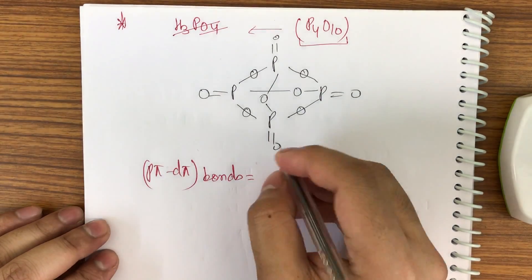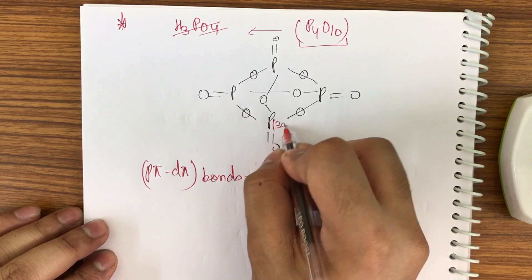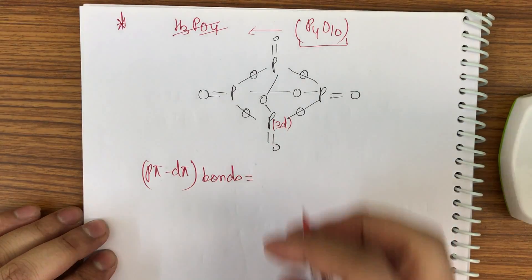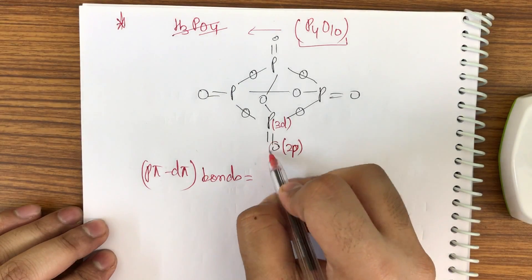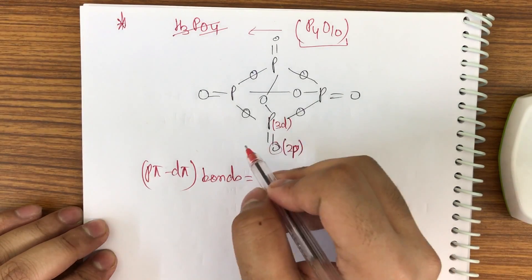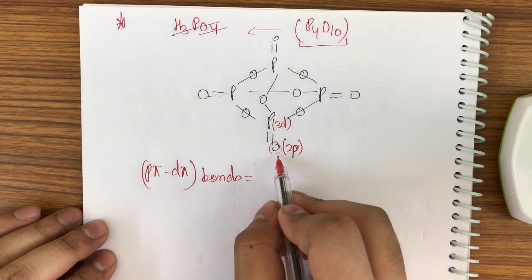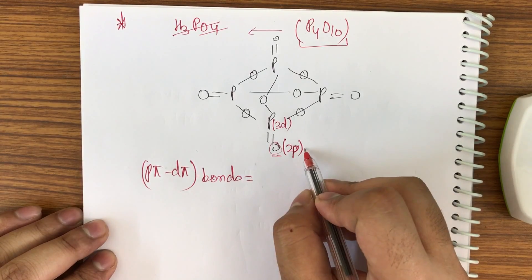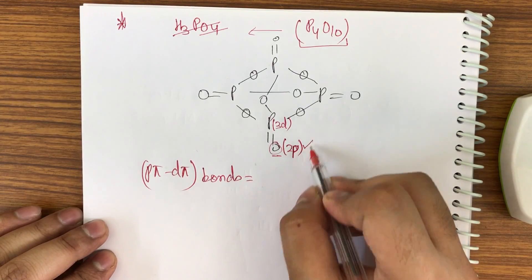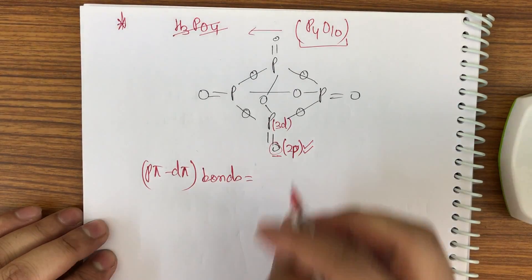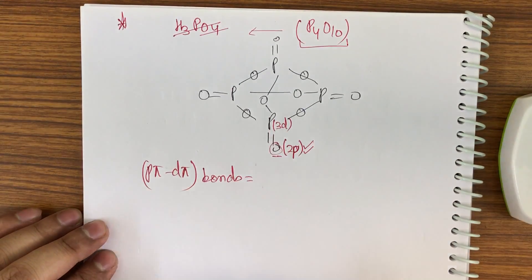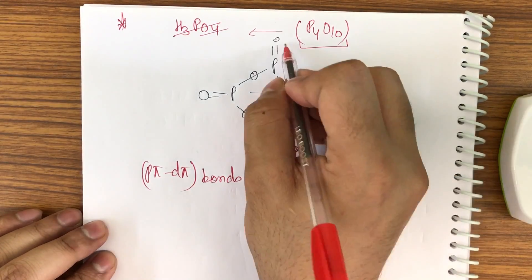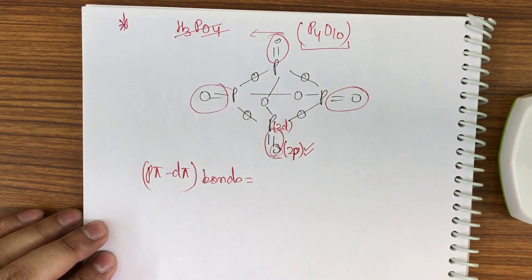Now I ask, how many ppi-dpi bonds are there? First of all I have to find them. See, this will get a 3d orbital for bonding and this will get a 2p orbital because it has only 2p orbital. It has 3d orbital as vacant, it does not have a 2d or 3d, so it has to apply for bonding through the 2p orbital only.